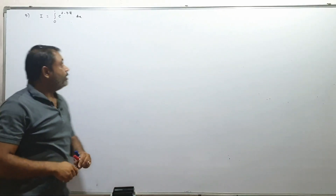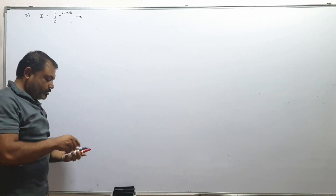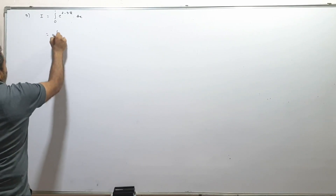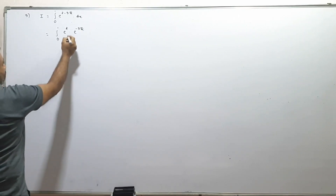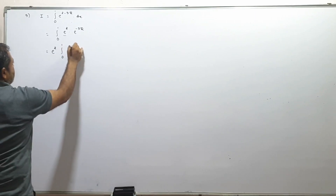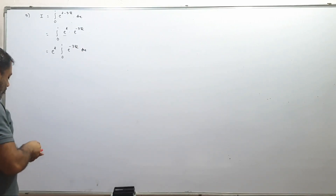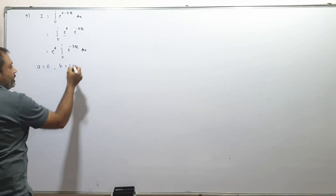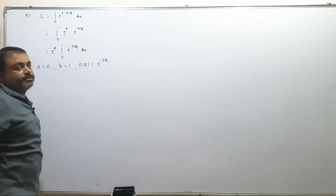Next example. I is equal to integral from 0 to 1 of e^(2 minus 3x) dx. We can write this as e^2 times integral from 0 to 1 of e^(minus 3x) dx. So a equals 0, b equals 1, and f of x equals e^(minus 3x). Clear?